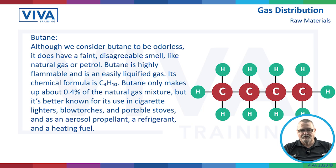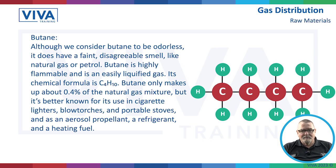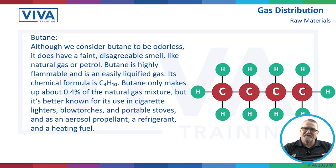Then we've got butane, the last of these gases. It does have a faint smell — a little bit like nitrile gas or petrol. It's highly flammable and easily turned into a liquid, so in the bottle gases they're liquids which, when released into the atmosphere, turn into a gas. Its chemical formula is C4H10 — four carbons and ten hydrogens — and it's only about 0.4% of the natural gas mixture. It's better known for cigarette lighters, blow torches, portable stoves, aerosol propellant and as a refrigerant, though it's now been phased out because it's a greenhouse gas.